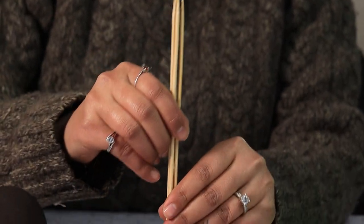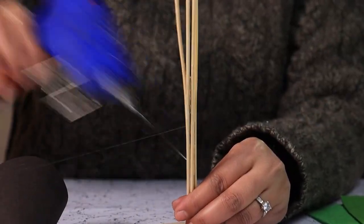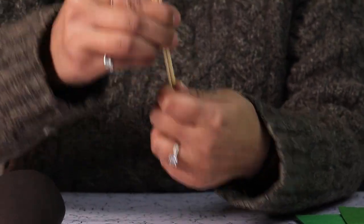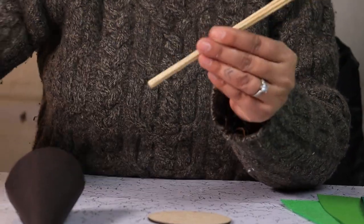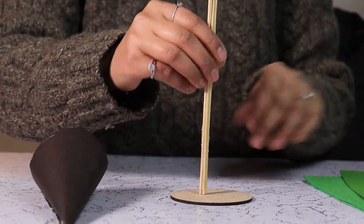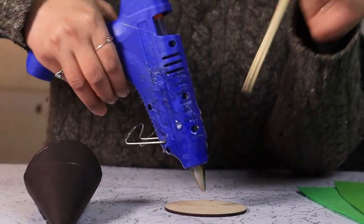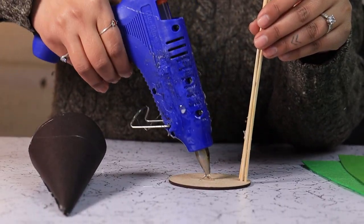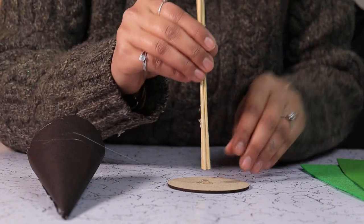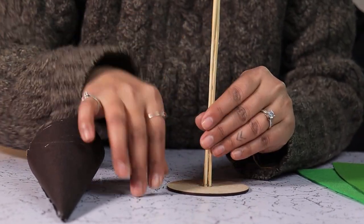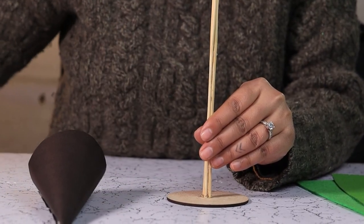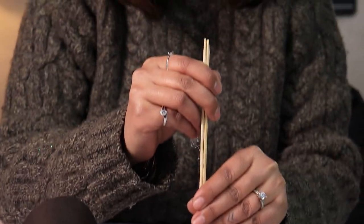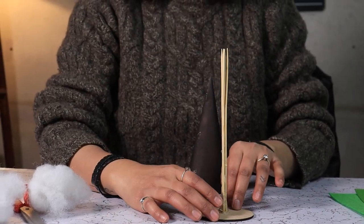Take four skewers, glue them together and glue these skewers on top of a flat surface. I am using a wooden coaster. These skewers will serve as tree stump.